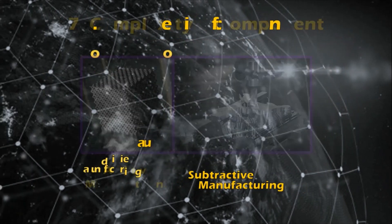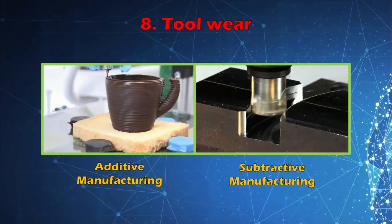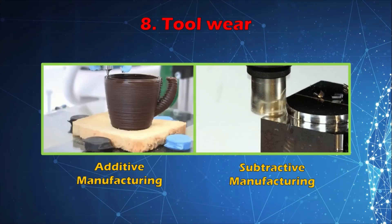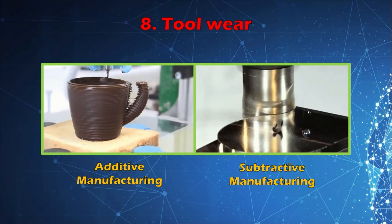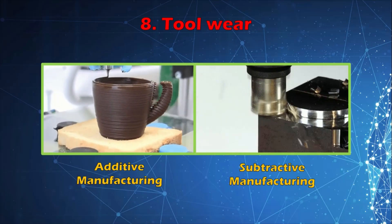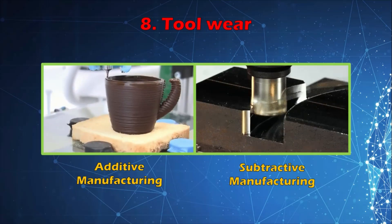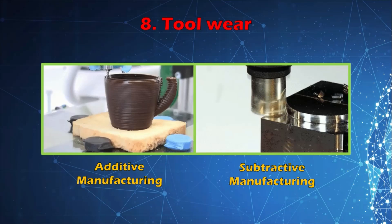Number seven: complexity of the component. With additive manufacturing, complex parts with intricate shapes and hollow cavities can easily be produced. But in subtractive manufacturing, intricate shapes and undercuts are very difficult to obtain — they have limited capabilities when it comes to complex geometry. Number eight: toolwear. In additive manufacturing there is no toolwear, because the process uses a variety of lasers and materials are projected onto the workpiece through nozzles. In subtractive manufacturing, the tool is in contact with the workpiece, generating large frictional forces and heat, requiring tool replacement whenever it wears out.